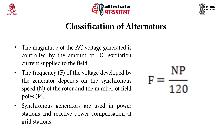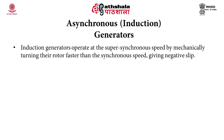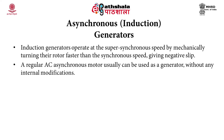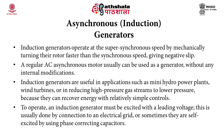Synchronous generators are used in power stations and for reactive power compensation at grid stations. Asynchronous generators are also known as induction generators. They operate at super-synchronous speed by mechanically turning their rotor faster than synchronous speed, giving negative slip. A regular AC asynchronous motor can usually be used as a generator without internal modification. Induction generators are useful in applications such as mini-hydropower plants, wind turbines, or reducing high-pressure gas streams to lower pressure. To operate, an induction generator must be excited with a leading voltage, typically by connection to an electric grid or by using phase-correcting capacitors.